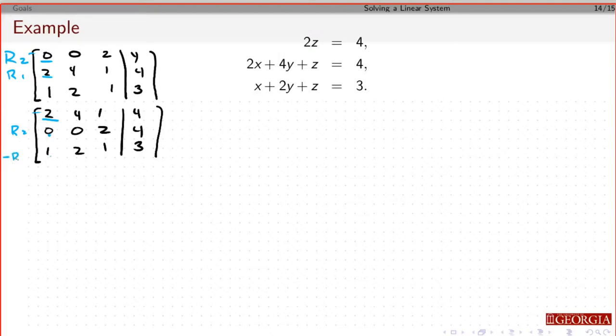I need to get a 0 there, so that's going to be minus row 1 times 1/2, plus row 3. So that'll give minus 2 times 1/2 is 1, minus 1 plus 1 is 0.